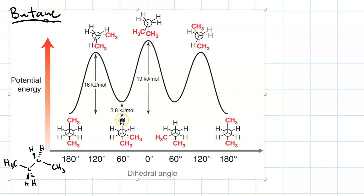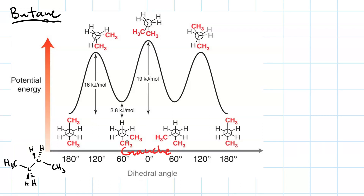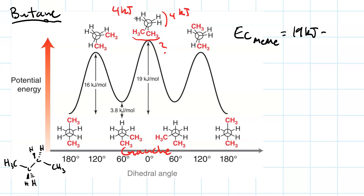At the local minimum, we're not down to zero energy because even though the two methyl groups are not eclipsed, they are 60 degrees from each other and bulky enough that there is still a steric interaction — this is called a gauche interaction. At the highest energy point we have a methyl–methyl eclipse and two H–H eclipses. The two H–H interactions are 4 kJ/mol each. The methyl–methyl eclipsing interaction equals 19 minus two times 4, which is 19 minus 8 — that's 11 kilojoules per mole, because those methyl groups are really bulky. The gauche interaction is worth 3.8 kilojoules per mole.